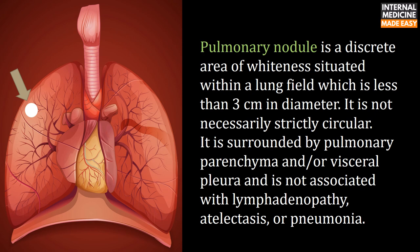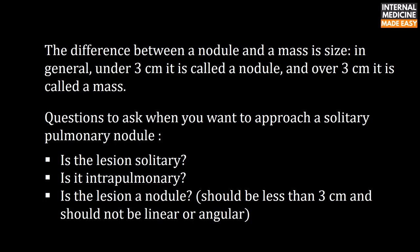A pulmonary nodule is a discrete area of whiteness situated within a lung field which is less than three centimeters in diameter. It is not necessarily strictly circular, is surrounded by pulmonary parenchyma and/or visceral pleura, and is not associated with lymphadenopathy, atelectasis, or pneumonia.